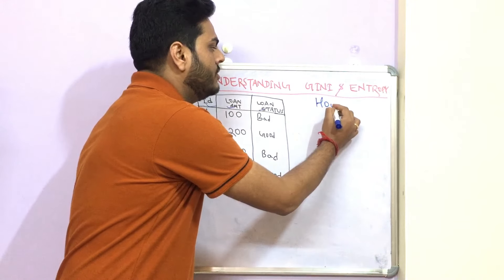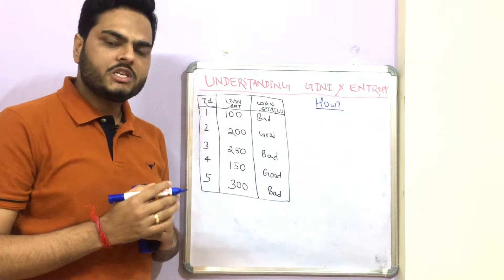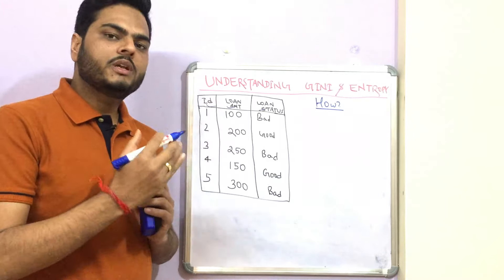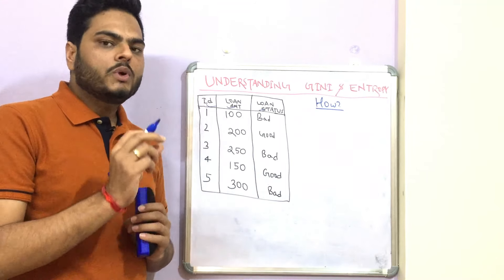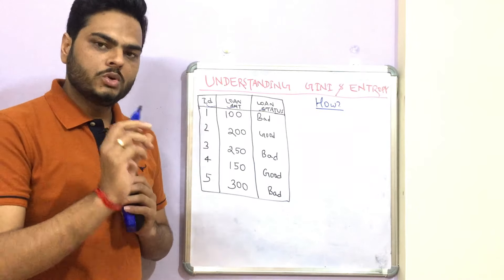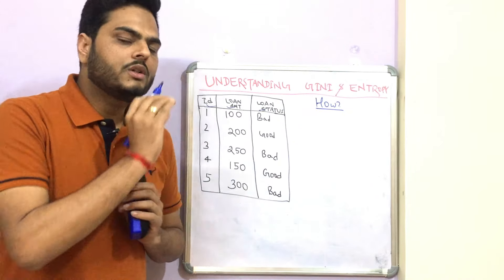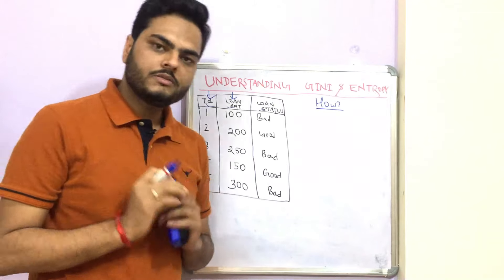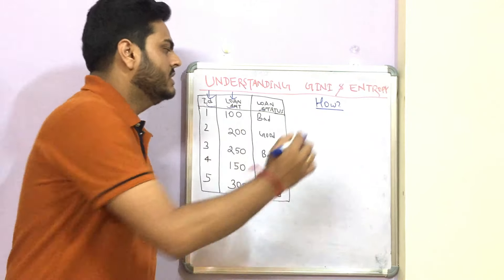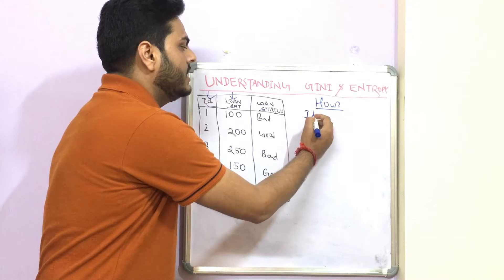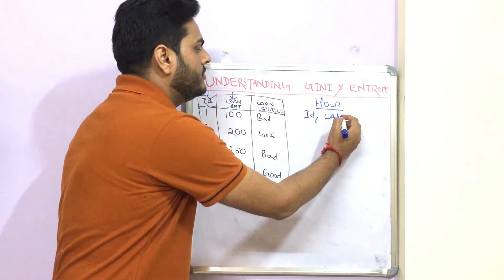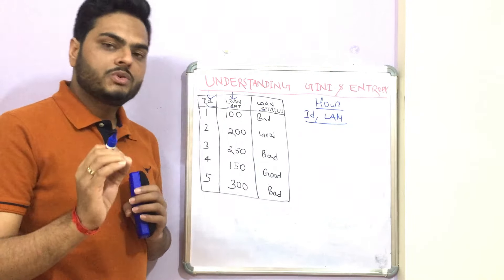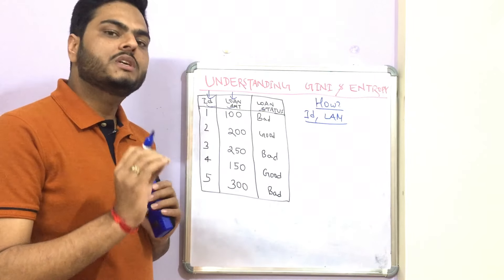The very first thing that will happen is the decision tree algorithm has to decide how to create the tree. As I explained in my last video, the decision tree algorithm creates a tree internally, and for creating the tree, it needs to decide what should be the root node. The candidates for the root node are all the independent variables — here, ID and loan amount.